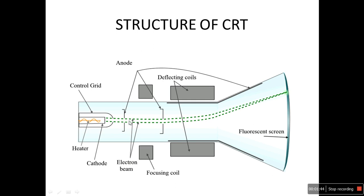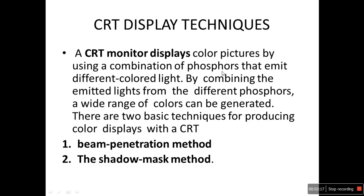We have the control grid and the cathode. This is the electron beam. These are the deflection plates and focusing coil — also called focusing plates — which focus the electron beam. The deflection plates or deflecting coils change the position of the beam, deciding where you want to display the picture. That is the structure of our CRT.